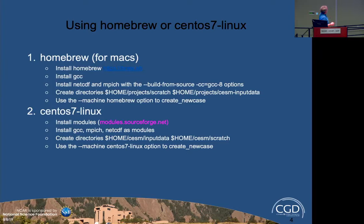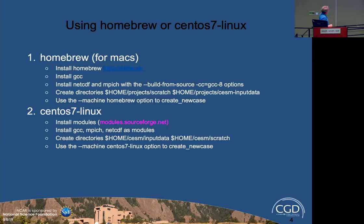Homebrew is a Mac package manager, and we have a Homebrew definition you can use. On your laptop, you would install Homebrew from their site, install the GCC compiler, and then NetCDF and MPICH. You want to create a couple of directories: the scratch directory is where your output will go, and input data is where your initial conditions files will go. Then you'd use the machine name 'Homebrew' to create a new case. The same thing with CentOS 7 — this uses modules, and you would install compilers, MPI, NetCDF, create directories, and go from there.